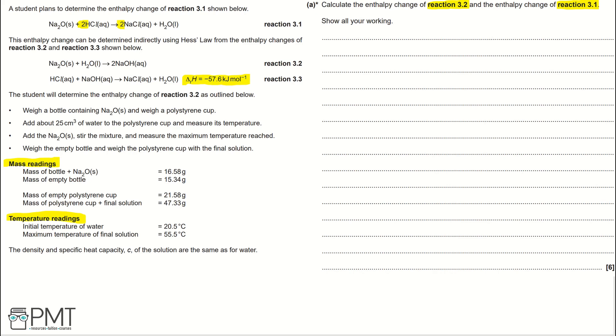Part A: Calculate the enthalpy change of reaction 3.2 and the enthalpy change of reaction 3.1. Show all working. By indirectly using Hess's law, this question is meaning we can combine enthalpy change values to get an overall enthalpy change value. So that means in the context of this question, the enthalpy change value of reaction 3.1 will equal the enthalpy change value of reaction 3.2 plus 2 of the enthalpy change values of reaction 3.3.